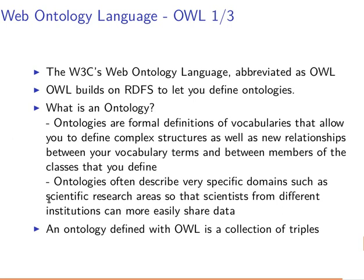Ontologies usually describe very specific domains, such as scientific research areas, so that scientists from different institutions or disciplines can more easily share data. Always remember that ontologies themselves are collections of triples — the idea of RDF, having subjects, predicates, and objects. Our ontologies are nothing but collections of triples, as we are going to see in upcoming videos.